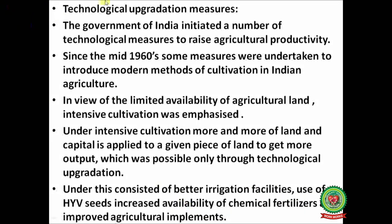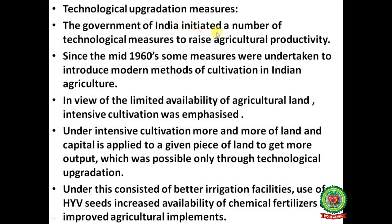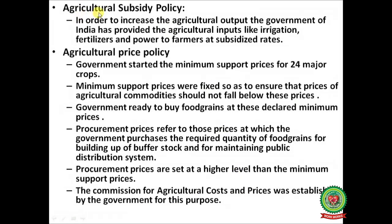Cooperative farming involves joint farming by small cultivators by pooling their land and other resources to reap the benefits of large-scale farming. Technological upgradation measures: the Government of India initiated a number of technological measures to raise agricultural productivity since the mid-1960s. Under intensive cultivation, more land and capital is applied to a given piece of land — possible only through technological upgradation — including better irrigation facilities, HYV seeds, chemical fertilizers, and improved agricultural implements.